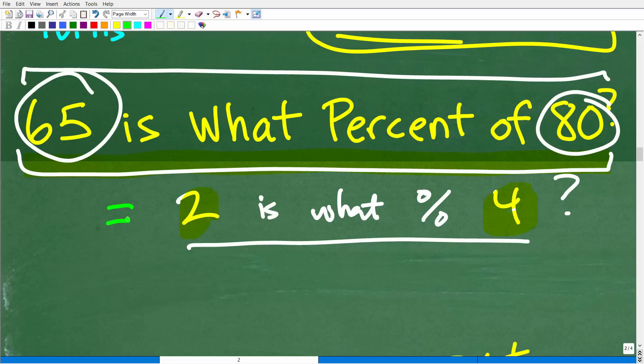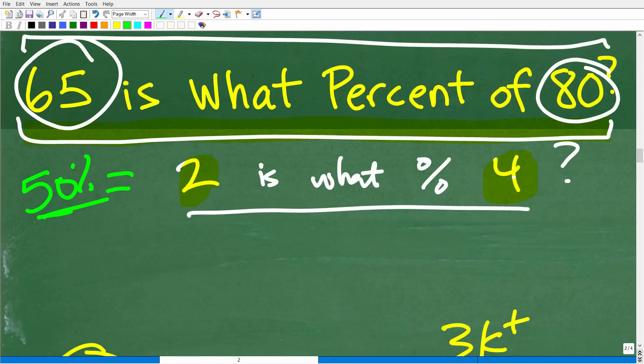Well, again, most of you are probably saying, hey, Mr. YouTube math man, that's so easy. It's 50%, right? Two is 50% of four. Well, that is correct. So how did we get 50%?